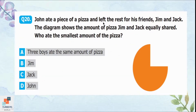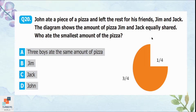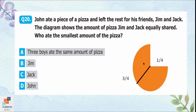Question 20: John ate a piece of pizza and left the rest for Jim and Jack, who equally shared what remained. Dividing the circle into four equal parts, John ate one piece out of four and left three-quarters for his friends. Jim and Jack each received a share greater than one-quarter. So John ate the least amount of pizza. Option D is correct.